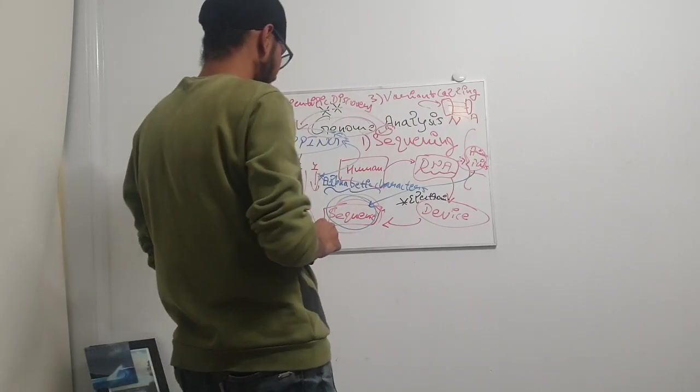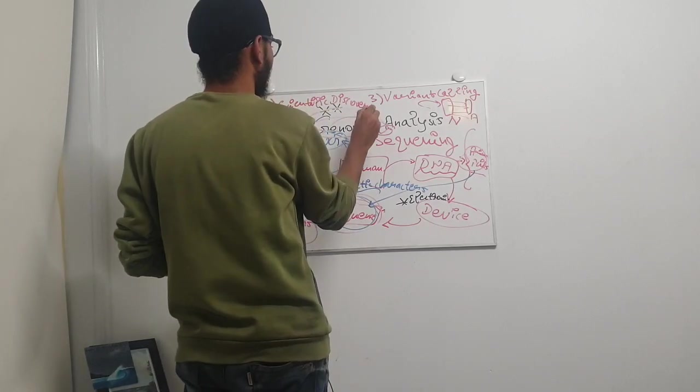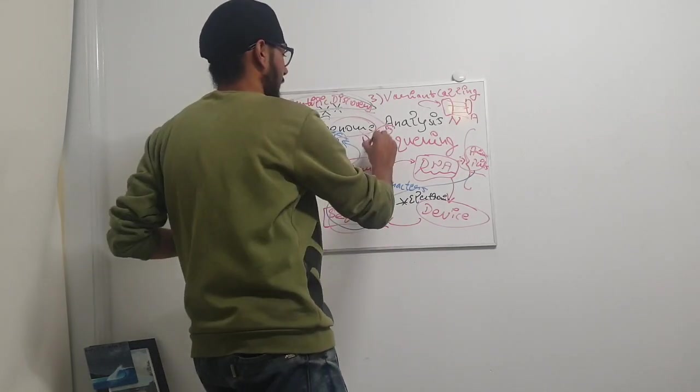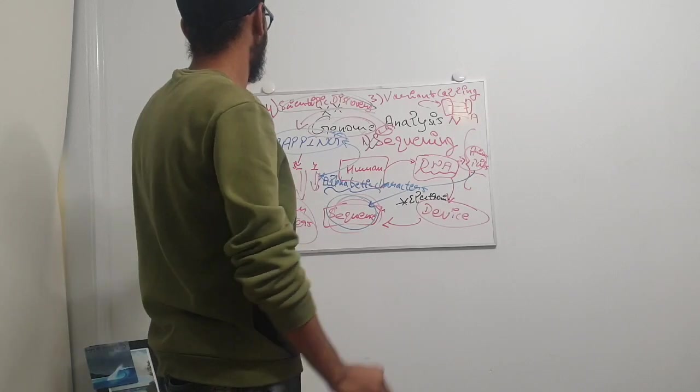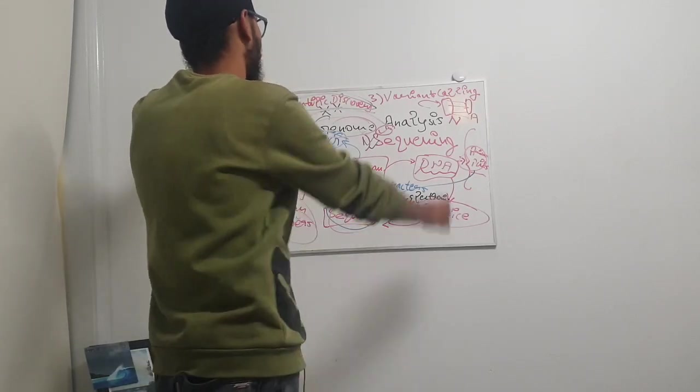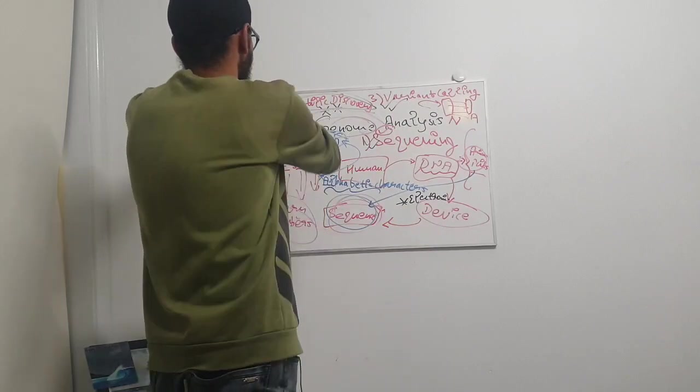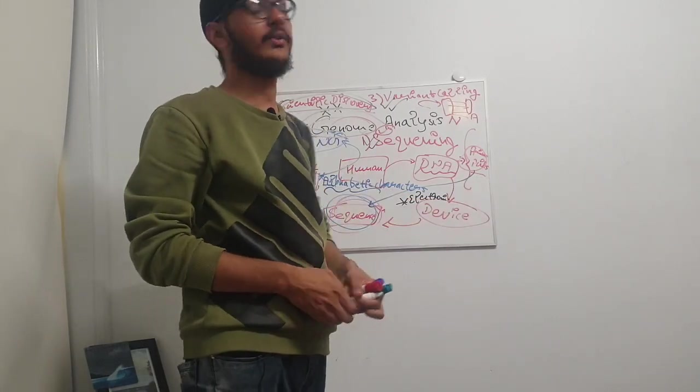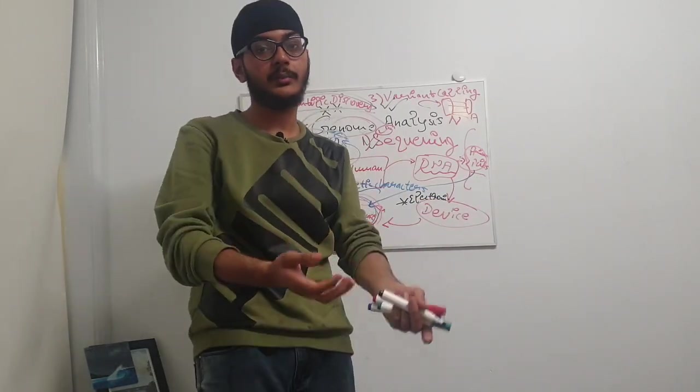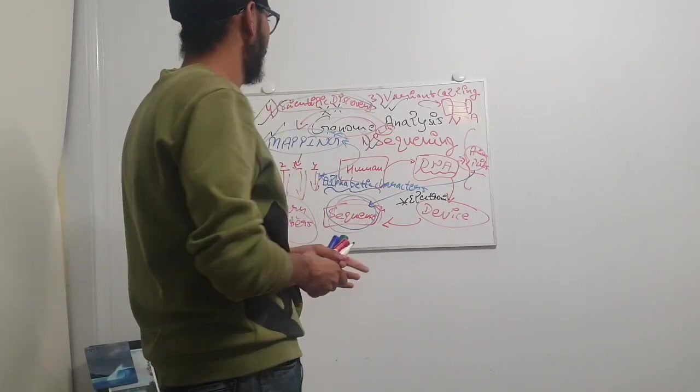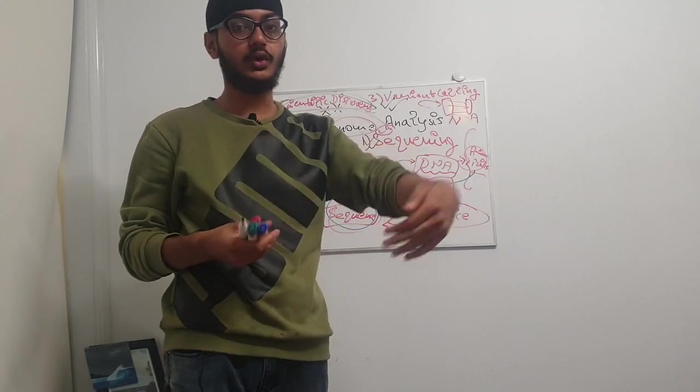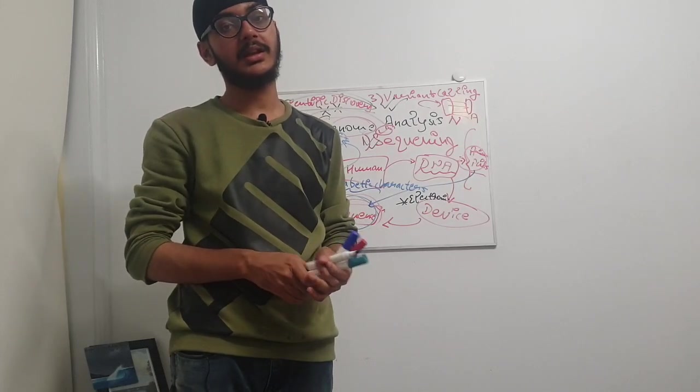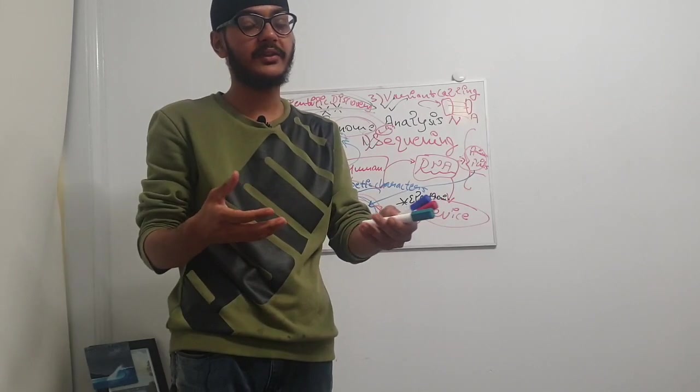Now we have done sequencing, mapping, and variant calling. Scientific discovery means that based on the DNA sequence that we have achieved in the form of zeros and ones in the computer's memory, now we're going to check what kind of research we can further do by using this data. Can we make new medicines or can we prepare some cures for diseases that are not curable nowadays?